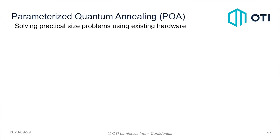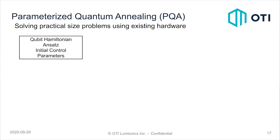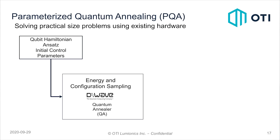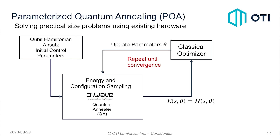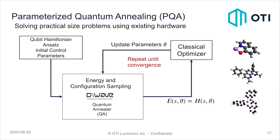One of the things we invented is a new technique called parameterized quantum annealing, which is similar to the variational quantum eigensolver. We have a qubit Hamiltonian, an ansatz that we propose, and a bunch of initial control parameters. We feed that into the D-Wave for energy and configuration sampling, which provides us with an energy. That energy we feed back up into a classical optimizer, updating these parameters and repeating until convergence. Because we have so many more qubits to play with, we're able to start simulating materials such as these OLED materials, from LIQ all the way to ALQ3.